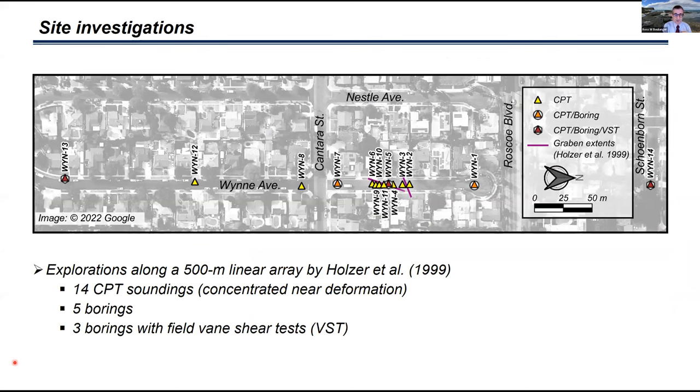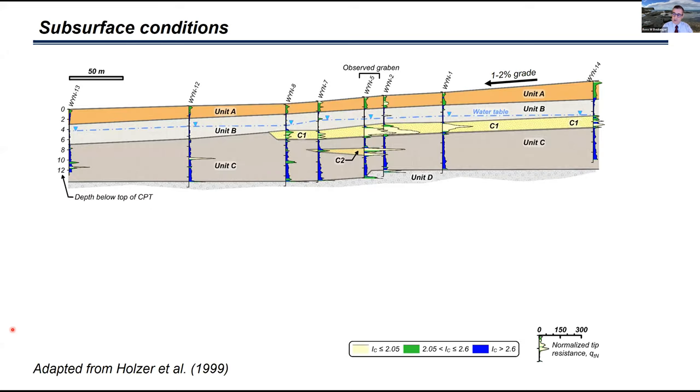The USGS did a number of explorations over a 500 meter array along Wynn Avenue. Right in the middle there are some purple lines, which are the outline of the graben extent. The CPTs were clustered close together near the graben to pick up some of the details and then spaced out more broadly as you move further away. This is a cross section illustrating the subsurface conditions at the site. The observed graben is marked here in the middle. The upper unit A is essentially road base and fill materials. Unit B is soft to firm clays overbank clay deposits. Then unit C is a stiffer clay overbank clay deposit, which has interbedded sand units, this one labeled C1 and this one below it C2.